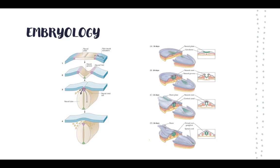Once we have our central canal, this becomes our spinal cord and brain as they further develop — you can see there's a brain end and a spinal cord end. Around day 25, the cranial end starts to fuse, and once it starts fusing, this brain part begins turning into different vesicles, which we'll see in the next slide. Then around day 27, the caudal end of the tube fuses.